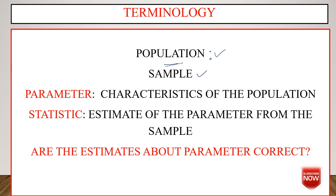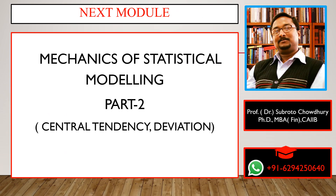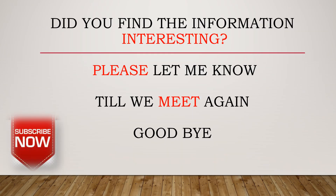The question is: are the estimates of our parameter correct? If the estimates of the parameter are unbiased and the model selected is correct, we get a very good approximation or idea about the future. In the second part of this discussion, we will talk about central tendency and the concepts of deviation, and how those concepts are used in statistical modeling. I hope you have enjoyed this video — please watch the modules one by one, take notes, and put any questions in the comments. Goodbye, take care.